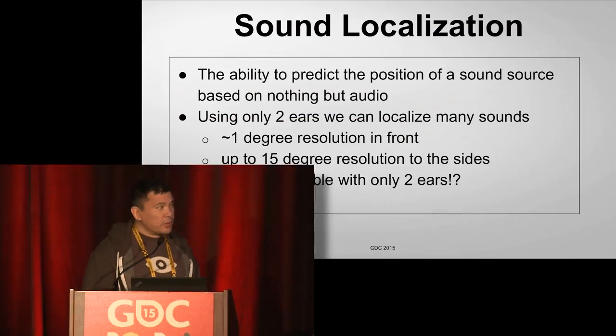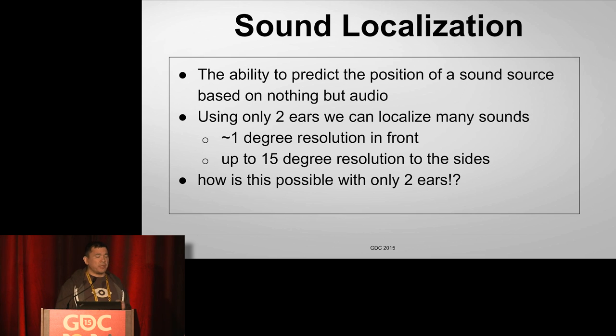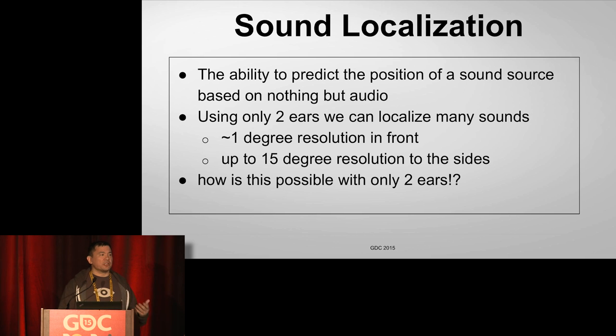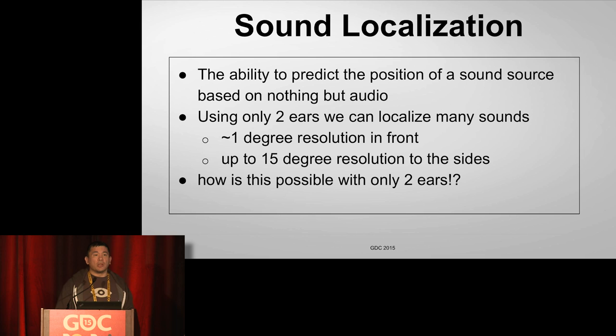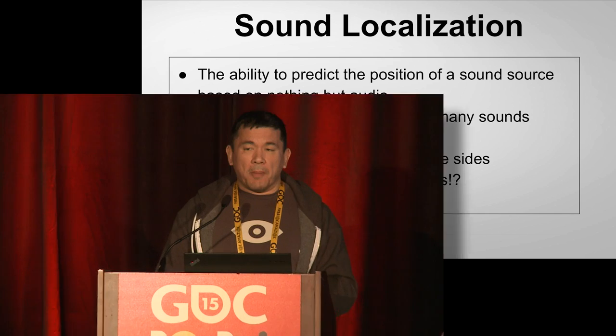I'm going to talk about localization — the ability to predict the position of a sound source based on nothing but audio. This is how human beings hear something and can detect where it's coming from. Using only two ears, we can localize many sounds with about one degree of resolution up front, about 15 degrees of resolution to the sides. This is possible using only two ears, which if you think about it, shouldn't actually be possible.